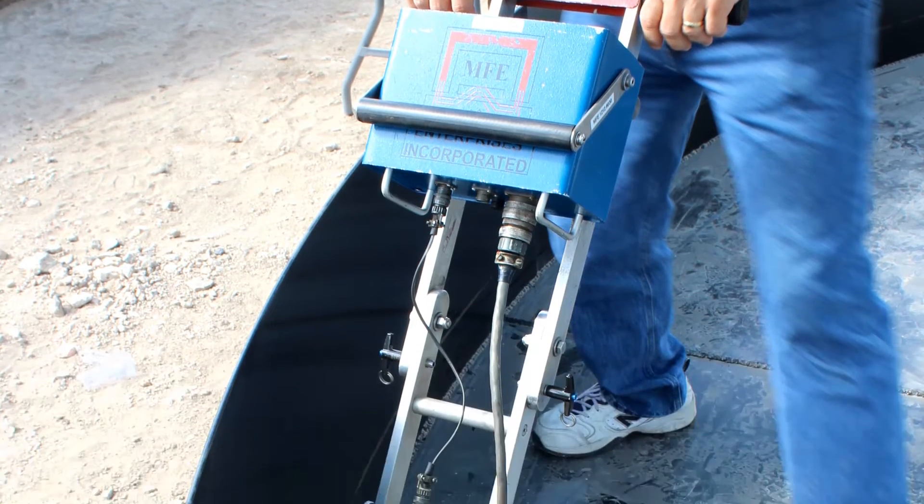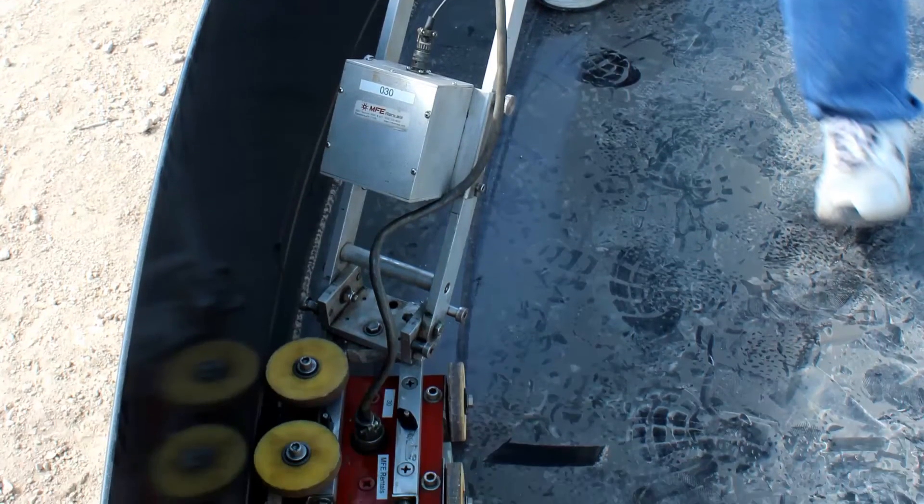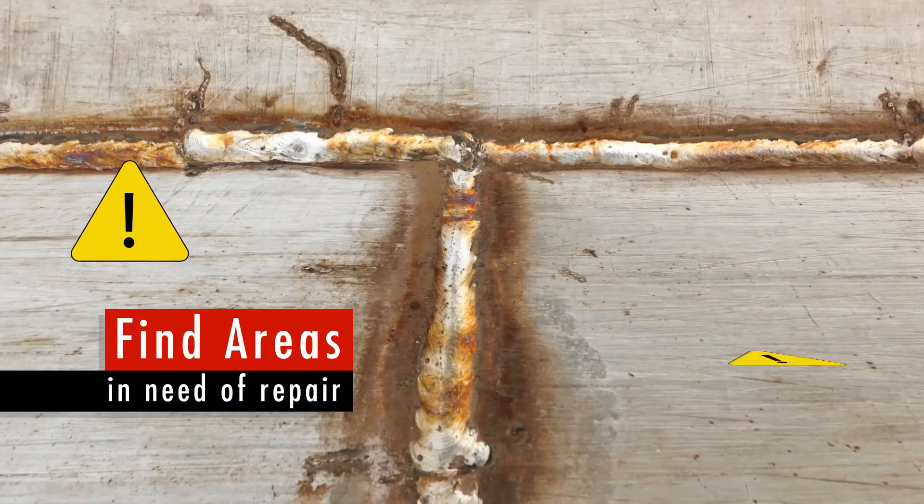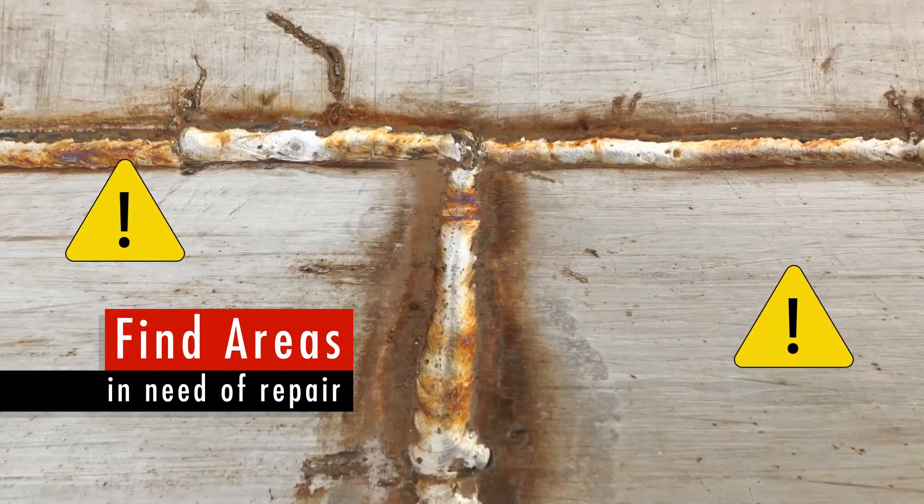The edge scan is designed so that the operator can get close to the tank shell for a fast and accurate inspection of the critical zone, helping find areas in need of repair before they lead to major structural damage.